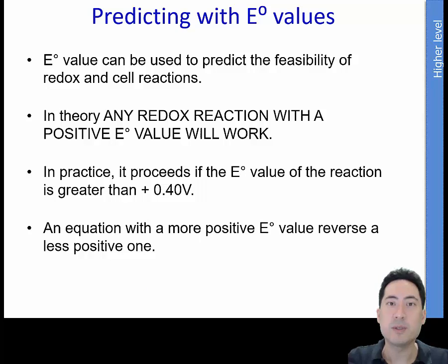So now we're going to predict the electrode values. We're going to do this more accurately using those tables. Just remember that the positive one is the one that usually wins. In practice, if it's not 0.4 volt, it's not likely to occur. And grab the less positive one and reverse it and then take its value.